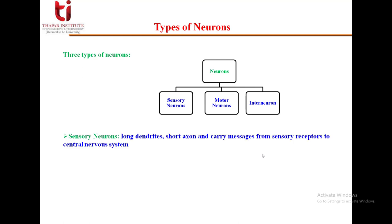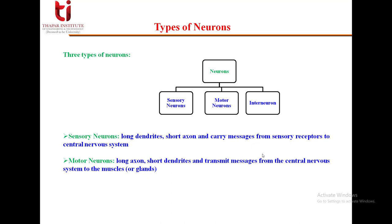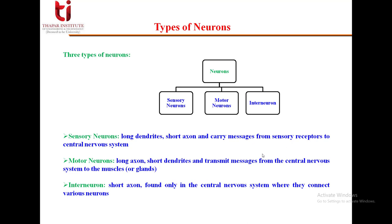Sensory neurons have long dendrites and short axons, and they carry messages from the sensory receptors to the central nervous system. Motor neurons have long axons and short dendrites, and they carry messages from the central nervous system to the muscles or glands. Interneurons also have short axons but are found only in the central nervous system, where they connect various other neurons.